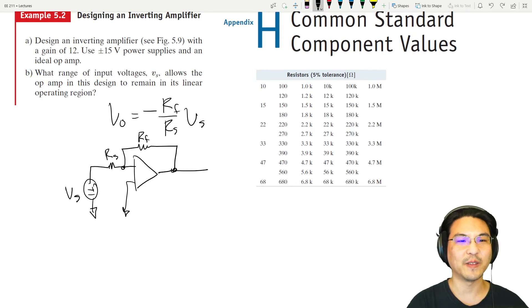Let's give this a try. Let's pick two resistors, and we want them to have a ratio of 12. Here, this is a table of common resistor values, so 10 and 120. If RF is 120 and RS is 10, then the gain will be negative 12. So that part's done.